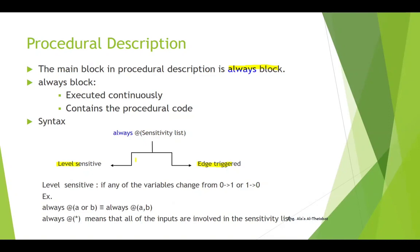We will enter the code using always, and we'll take an example of how to write two variables. We use the procedure with variables A and B, entering always with A or B — meaning any change in A or B, any change from 0 to 1 or 1 to 0, triggers the always block. All the inputs in the design are involved in the sensitivity list.